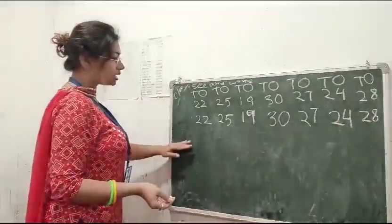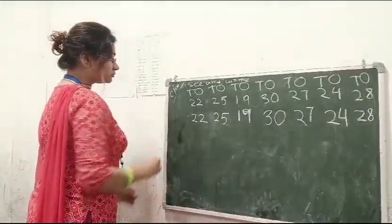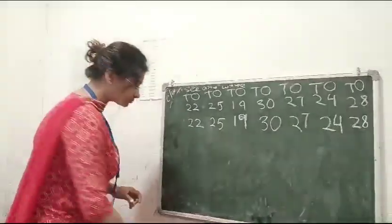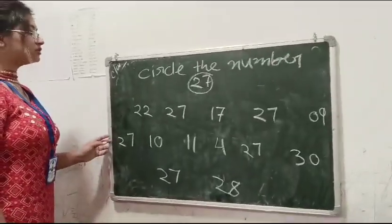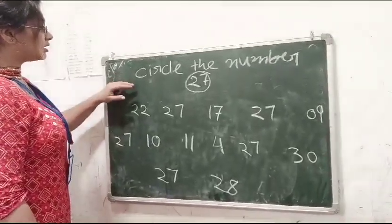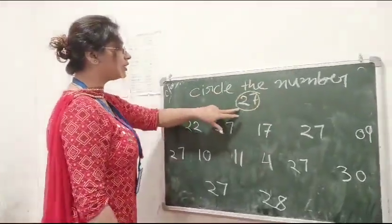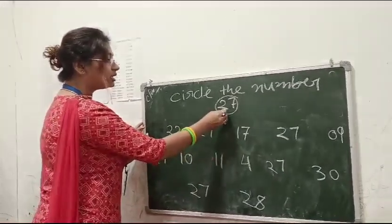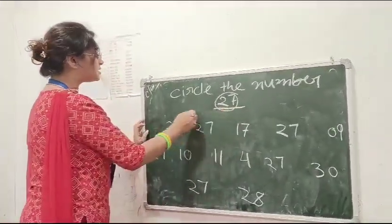So, as you can see. Okay. Thank you. Okay. So students, circle the number 27. You have to circle only this number. 27.